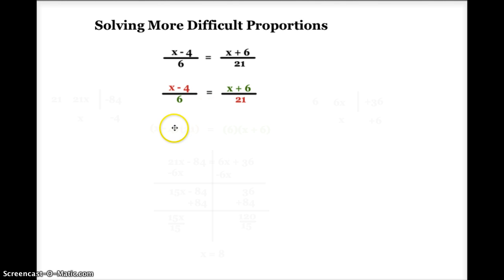When I do that, I have x minus 4 times 21 is the same as 6 times x plus 6. Both sides of this new equation have parentheses. I'm going to use the distributive property to simplify each side of the equation.